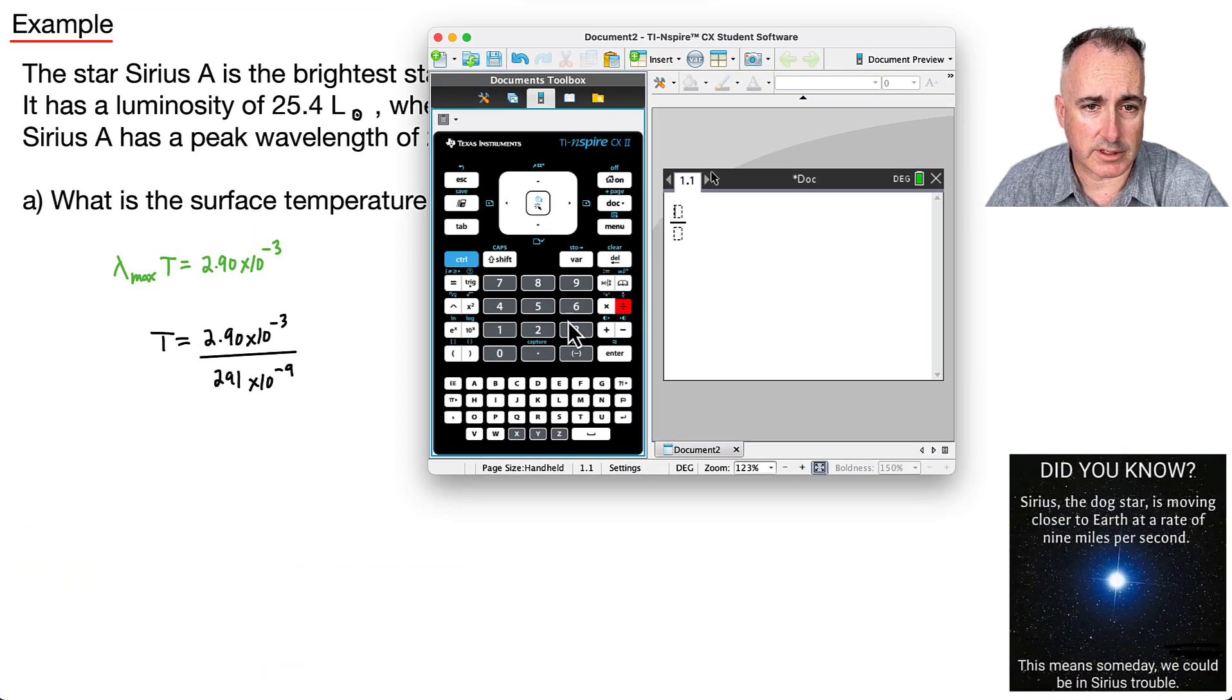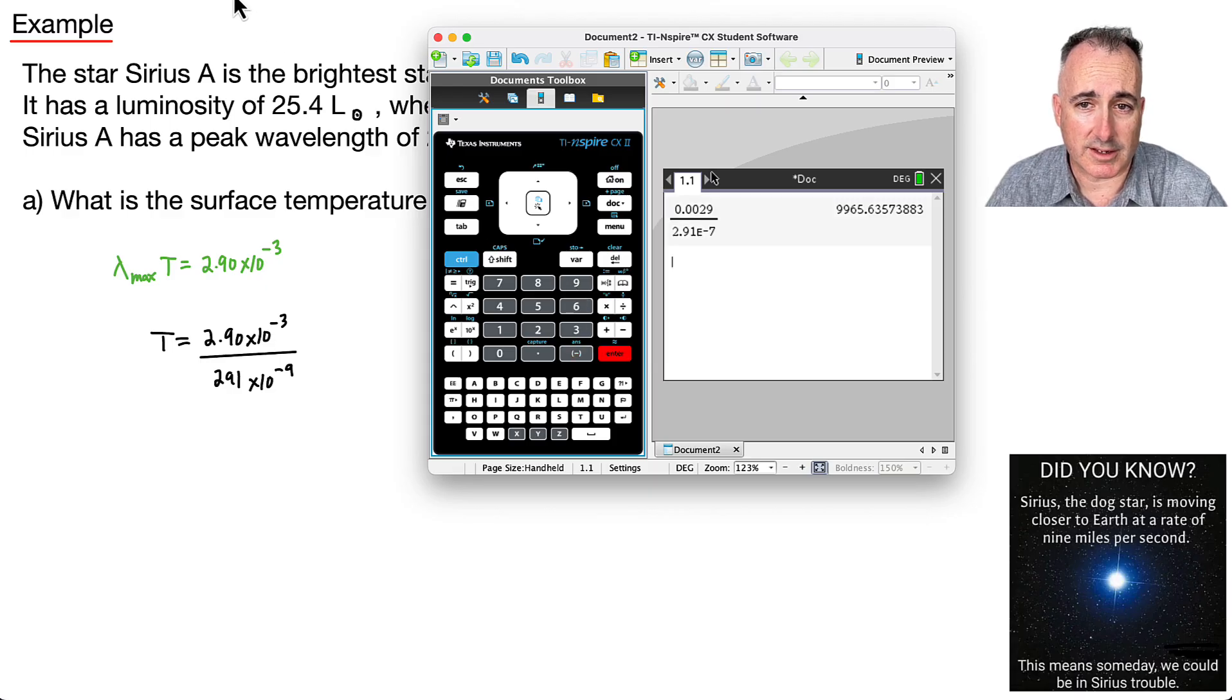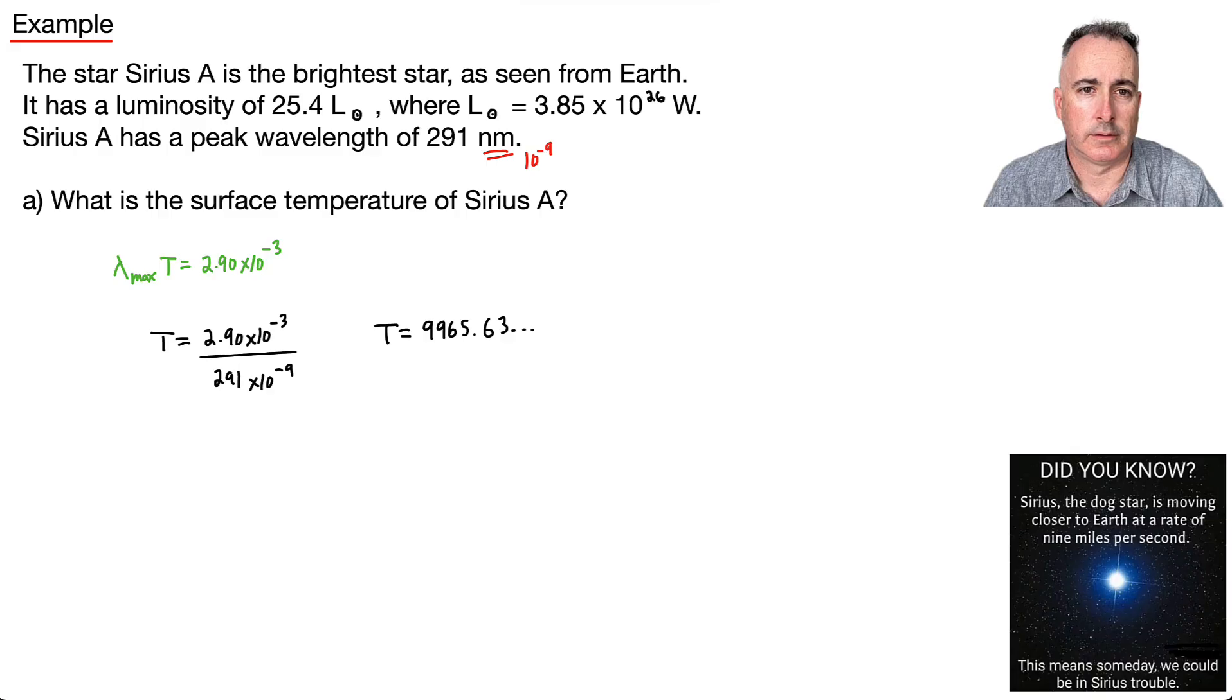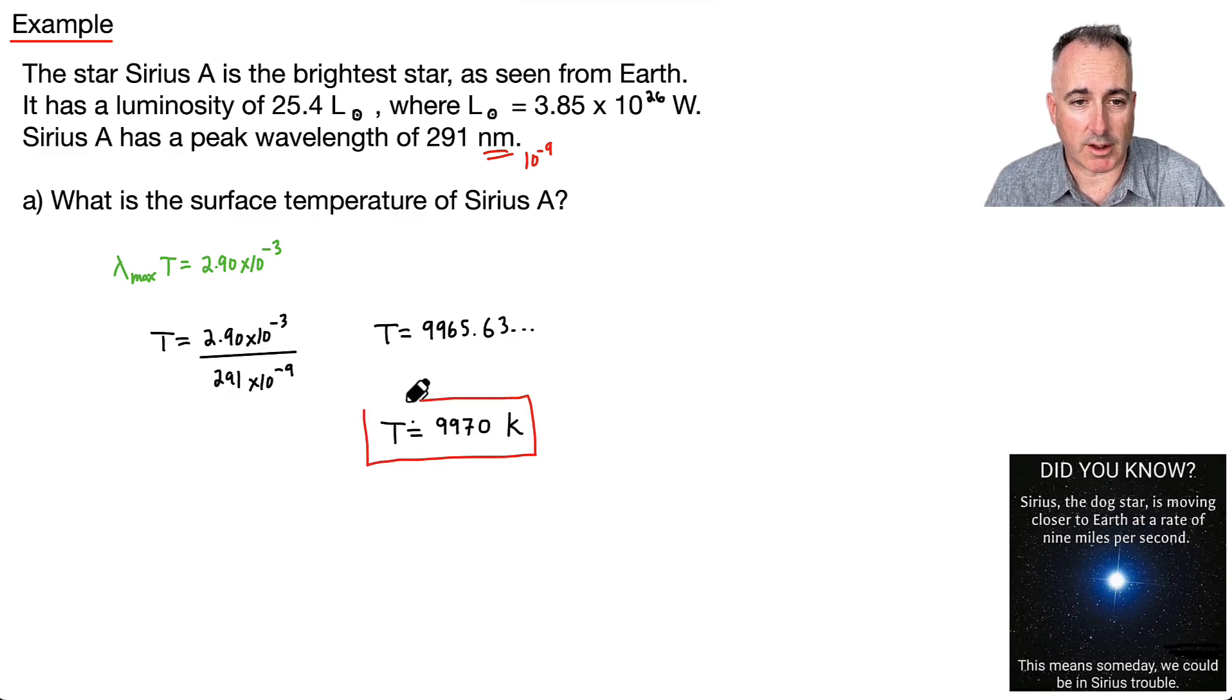I can use my calculator for this. So I'll get it out and start making a fraction. I want 2.90 × 10⁻³ all divided by 291 × 10⁻⁹. I end up with an answer of 9965 point, you know, a bunch of decimals here. So how many significant figures can I use? I've got 3 here, 3 here, 3 here. I guess I can only use 3. So I'll say the temperature, the surface temperature at least, will be equal to 9970 Kelvin. So there we go. We've solved part A.